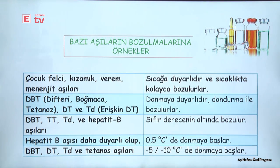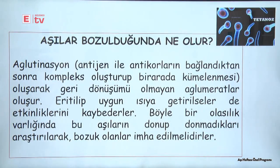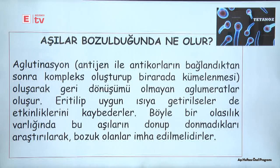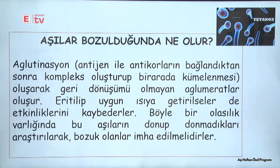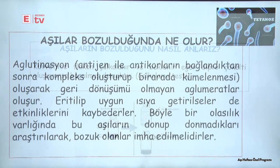Aşılar dondurulduğunda bozulabilirler. Aglütinasyon dediğimiz süreçte; antijen ile antikor birbirine bağlandığında bir kompleks oluşur ve bu kompleks kümeler, yani aglümeratlar meydana getirir. Eritilip tekrar uygun ısıya getirilseler de etkinliklerini kaybetmiş olurlar. Dolayısıyla bir aşının dondurulup tekrar eritildikten sonraki durumunun bozulup bozulmadığı kontrol edilmelidir.